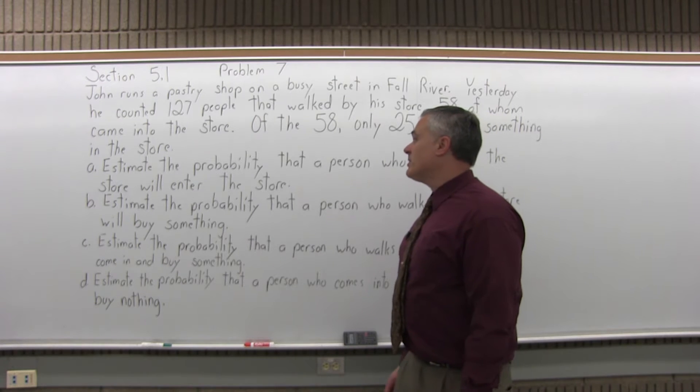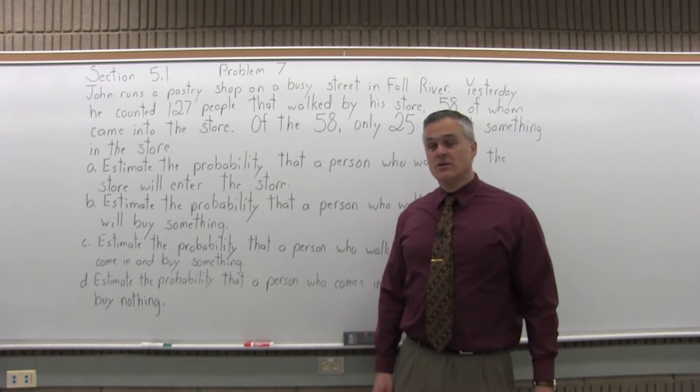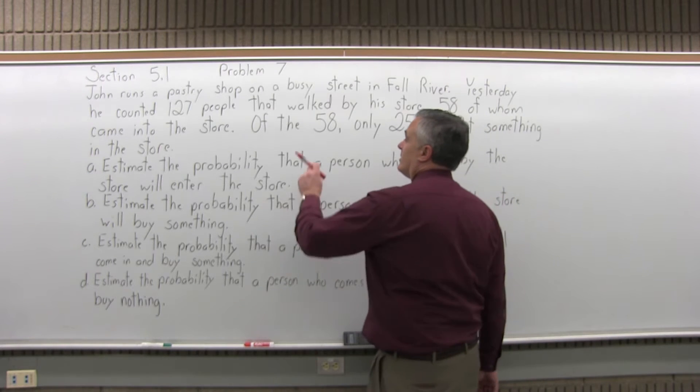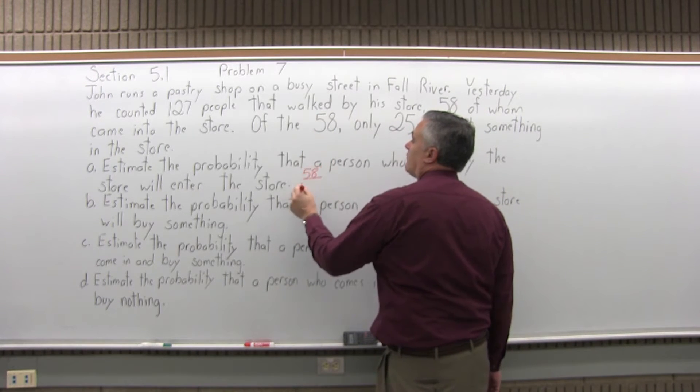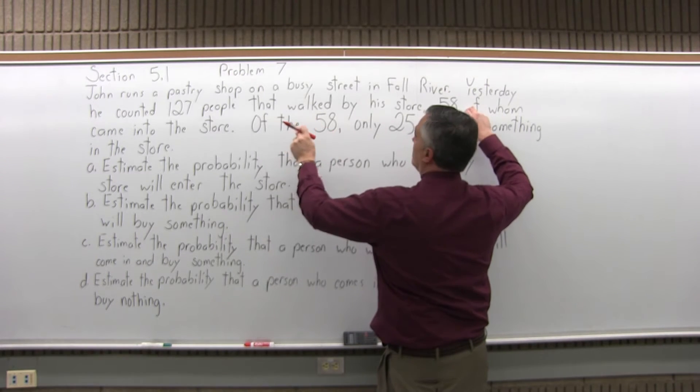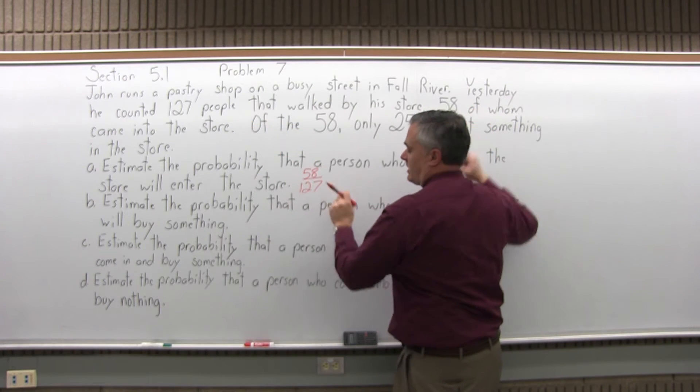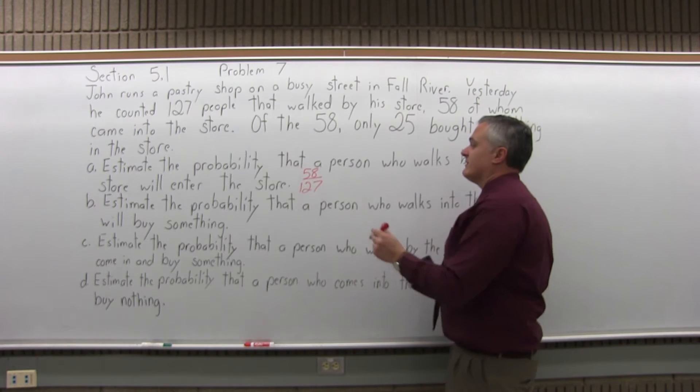Part A: estimate the probability that a person who walks by the store will enter the store. There were 58 people who entered out of 127 that walked by. You can leave it as 58 over 127, or if you prefer a decimal or percent, calculate 58 divided by 127.